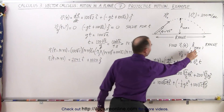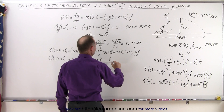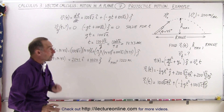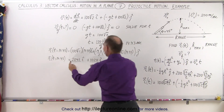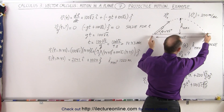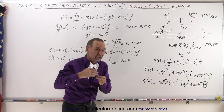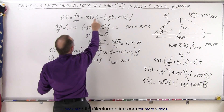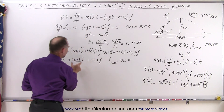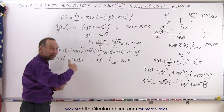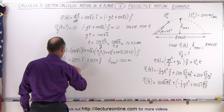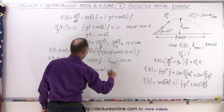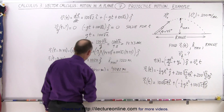H-max equals 1020 meters. For the range: we already covered 2041 meters horizontally when reaching the peak. Since the projectile takes just as long coming down as going up, and the x-velocity is constant, we travel that same distance again. Therefore, the range equals 2 times 2041 meters, which is 4082 meters.